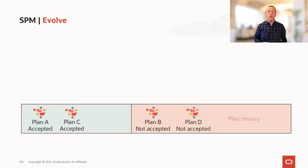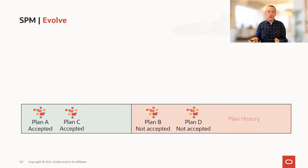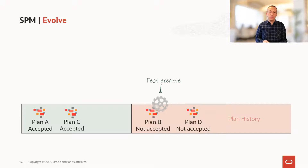Now we need to talk about evolving. Imagine our users have been using the database for a while and for one specific SQL we now have multiple plans in the plan history. We need to find out whether those plans are actually good or not, and we do that by doing a test execution.